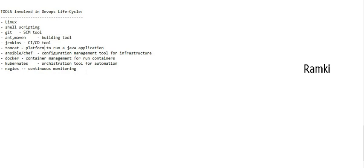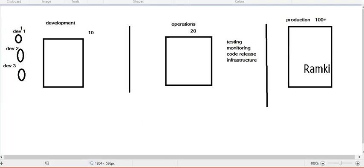I'm going to talk about development — we will develop and move to production, this is a normal task. Then we will implement DevOps with automation. Automation is a tool we will use to automate repetitive tasks. Then we will observe the developers writing code using source code.